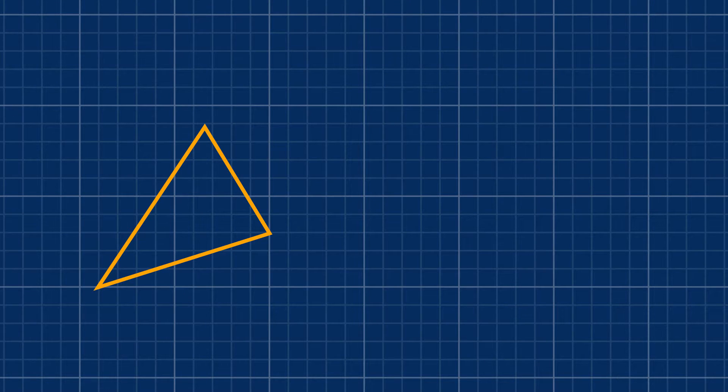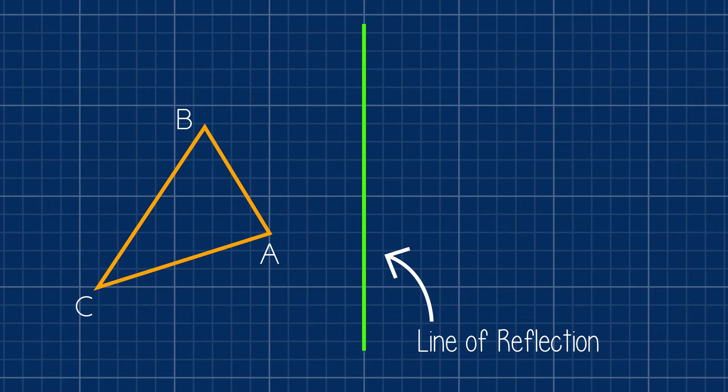Here's our triangular window. We call this triangle ABC. And here's our line of reflection. We want a perfect copy of this triangle folded over this line. To do that, we're going to go point by point.